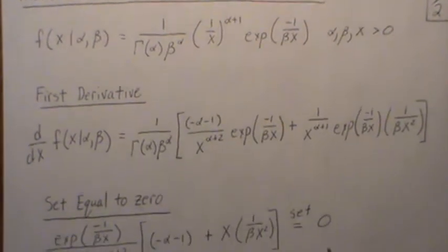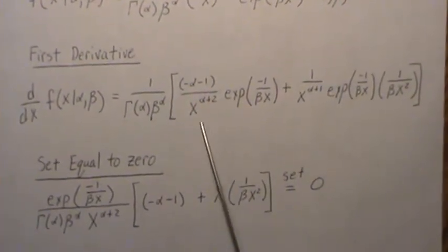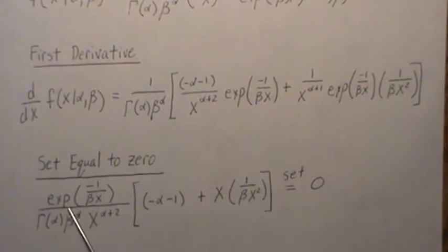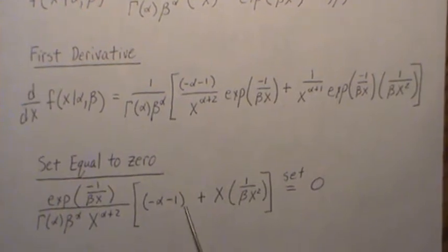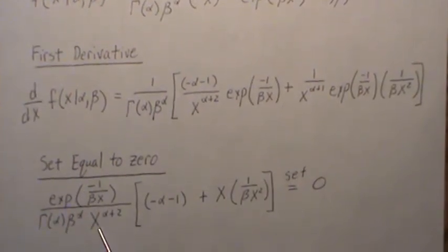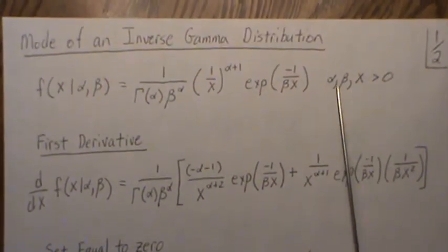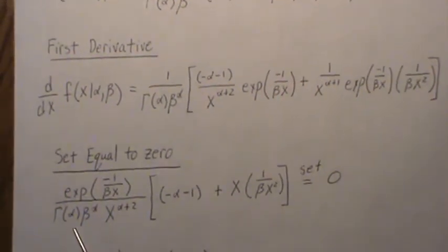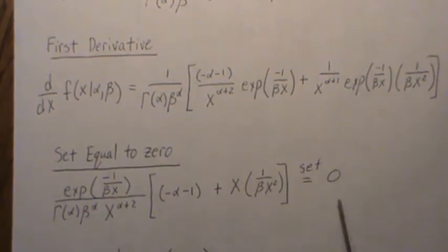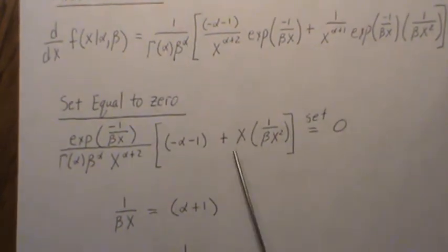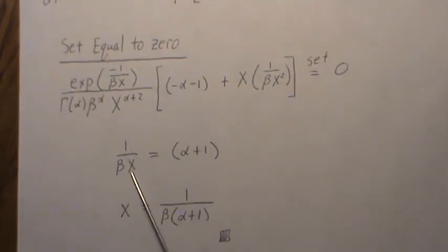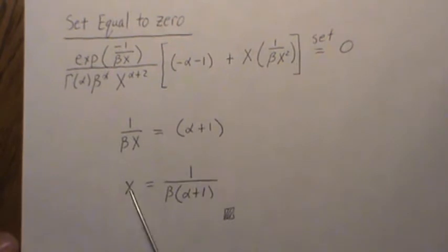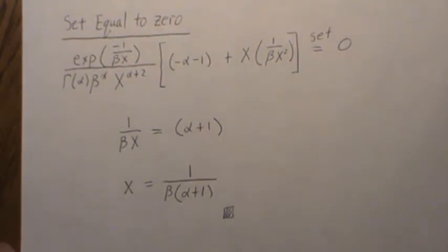Now we want to set it equal to zero. So I factor out these terms and this is left over. Since all these have to be positive, we can divide to the other side, and we're left with this piece here. Then we subtract that to the other side and multiply by X divided by X plus 1, and we get this, which is the mode of an inverse gamma distribution.